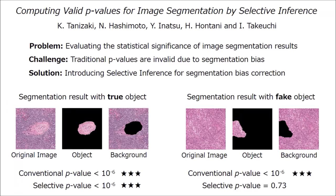In this paper, we consider how to provide statistical significance for image segmentation results. The p-value provided by traditional tests suggests that the segmentation result in the left is statistically significant, in the sense that the object and the background are significantly different, which sounds reasonable.